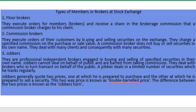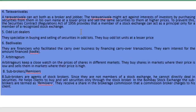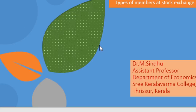To summarize, the various types of members in the stock exchange are: floor brokers who execute orders of brokers; commission brokers who help customers to buy and sell; jobbers who can buy and sell securities in their own name; tarawaniwallahs who buy at a low price and sell at a high price; odd lot dealers who deal in odd lots; badla who act as financiers; arbitrators who take advantage of price differences in various markets; and sub-brokers who are agents of the brokers.